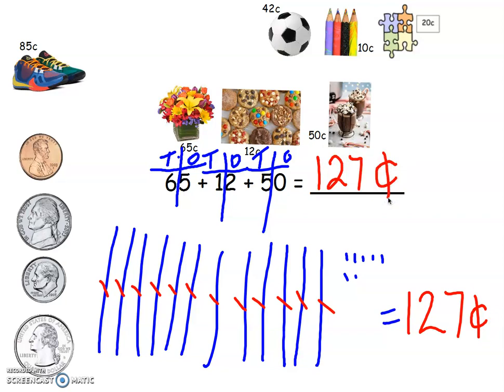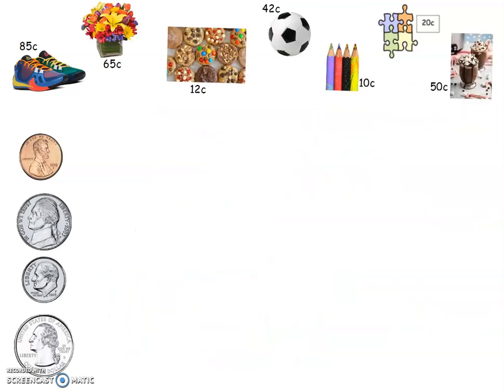And remember we know that that can also be written: I have one dollar, it's 100 cents, and 27 cents. One dollar and 27 cents. That's pretty cheap, I can get a lot of stuff for just a little bit of money. Here is this screen again. If you want to pause it, go ahead and pick your own items and you can try it yourself.